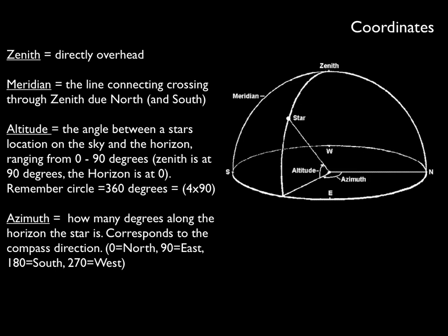For example, a star in the southwest could have an azimuth between 180 and 270 degrees.